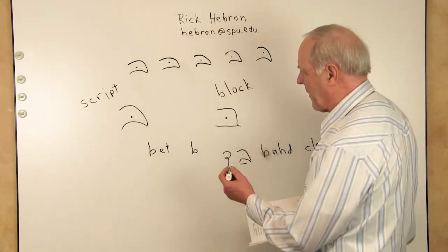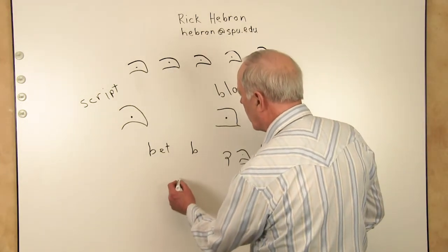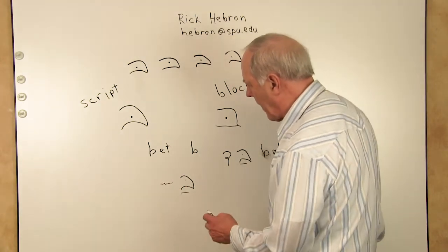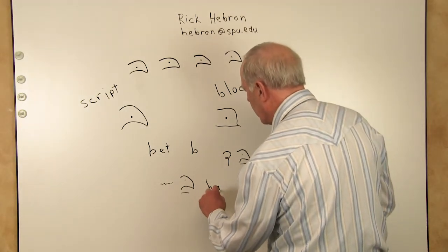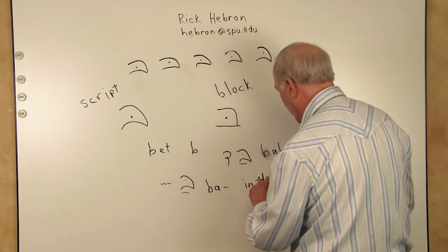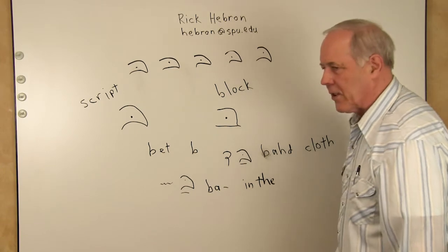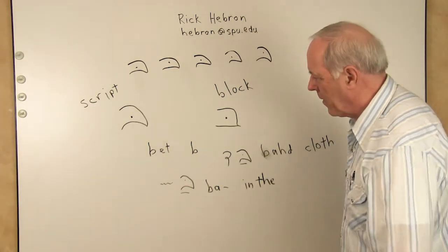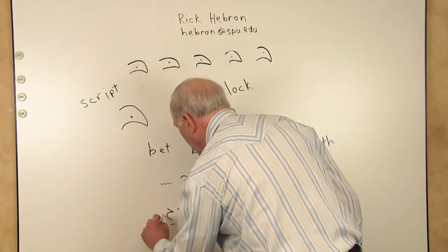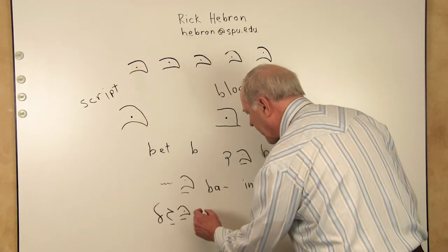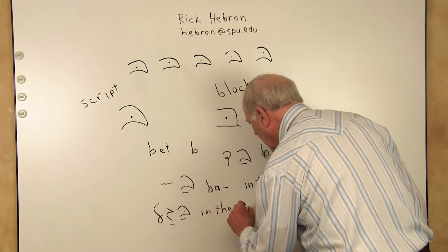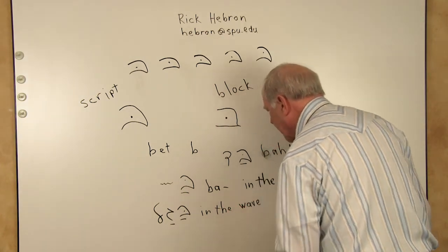So, next we will just have a suffix. If we go Ba, and then we add a word there, it means in the. Ba means in the. You might say in the wave. We've had that word, in the wave. Ba gal. Ba gal, in the wave.